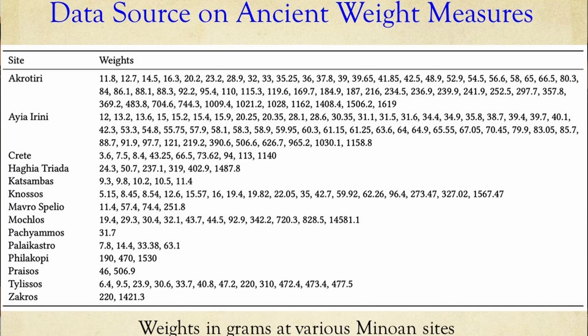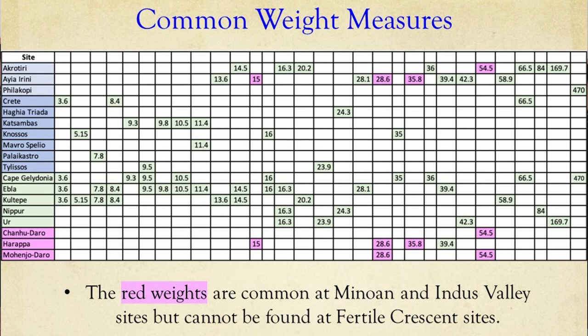We identified those sites associated with Mesopotamia. Those green ones, in each column, show a perfect match of weights — 3.6 grams in the first column and 470 grams in the last column to the right. So in each column there is a perfect match, and when there is a green weight it can be assumed that those weights come from Mesopotamia.